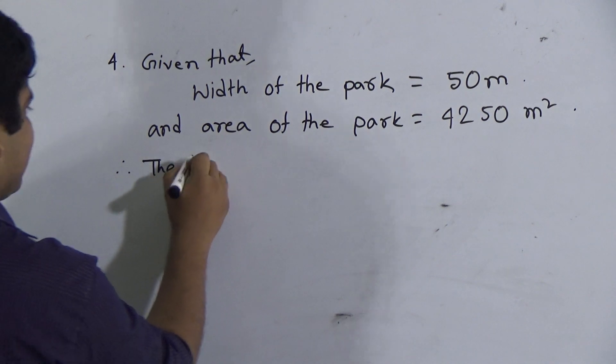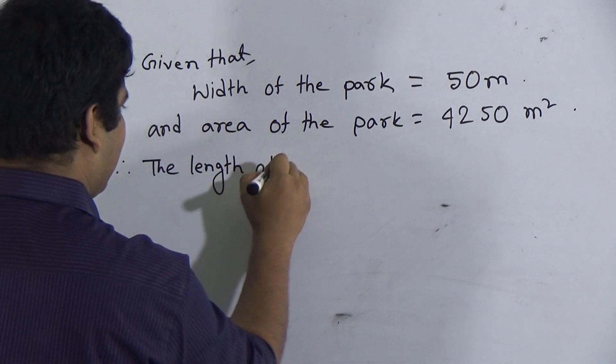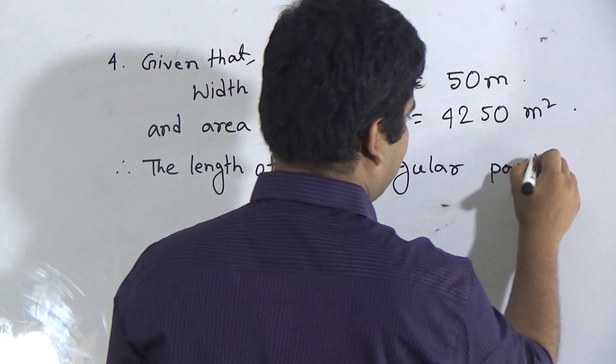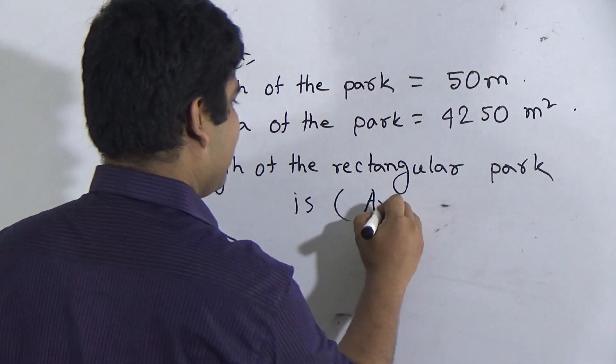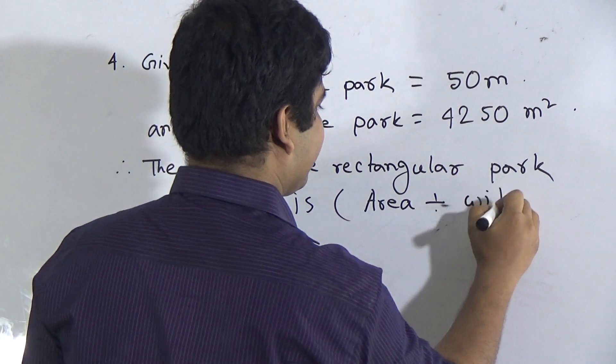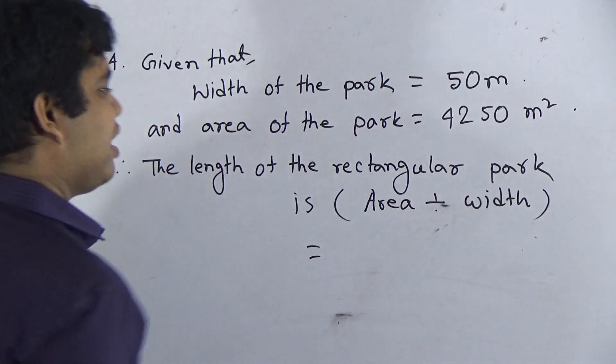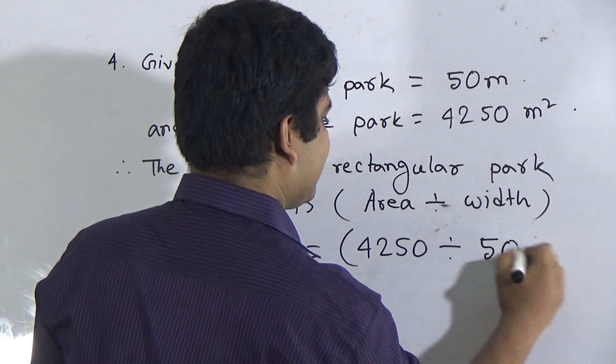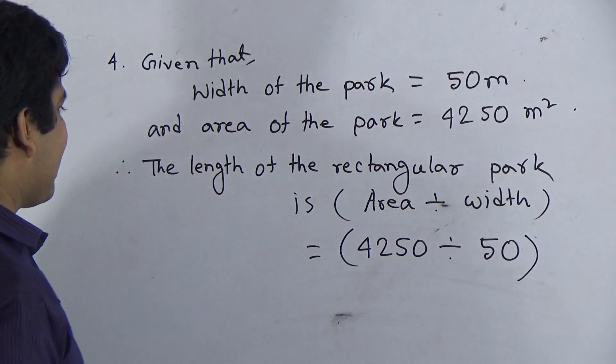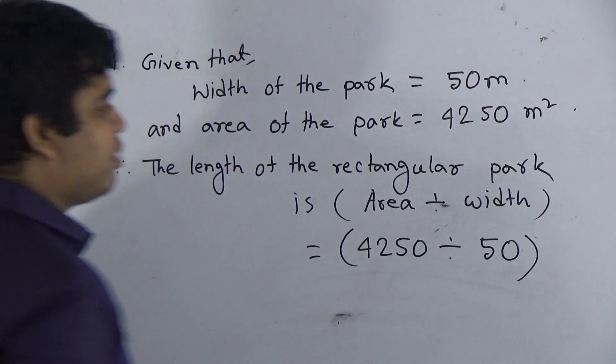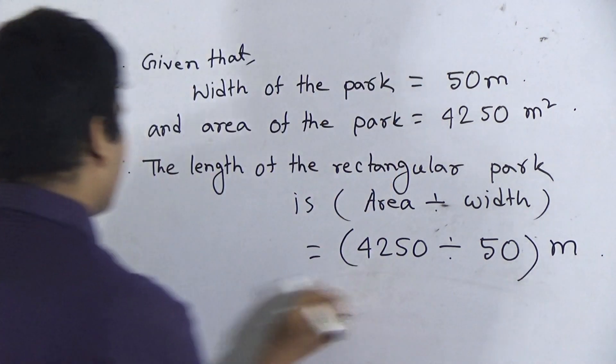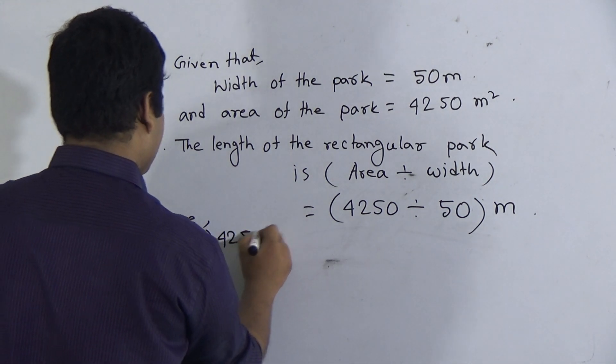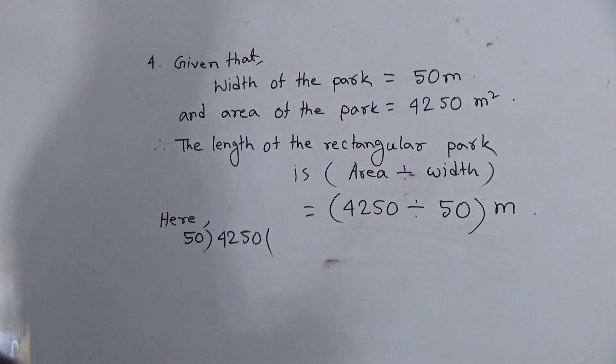Therefore, the length of the park is area divided by width. Now, we put the value of area and width. Here, area is 4,250 and width is 50. And as we need to find out the length, so unit will be meter. Now, here we show the division procedure. 50 divided by 4,250. Here, 4,250 is the dividend and 50 is the divisor.